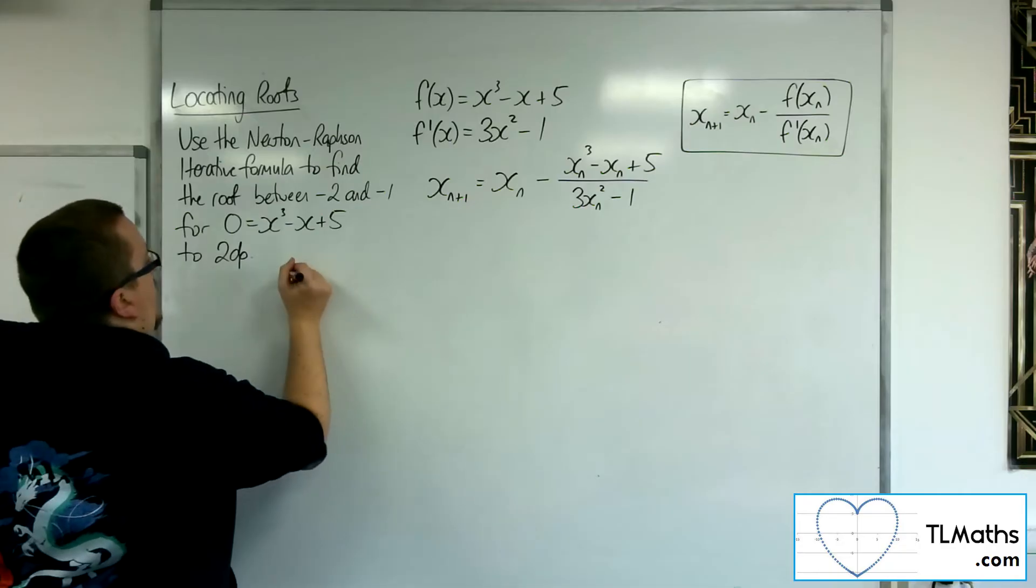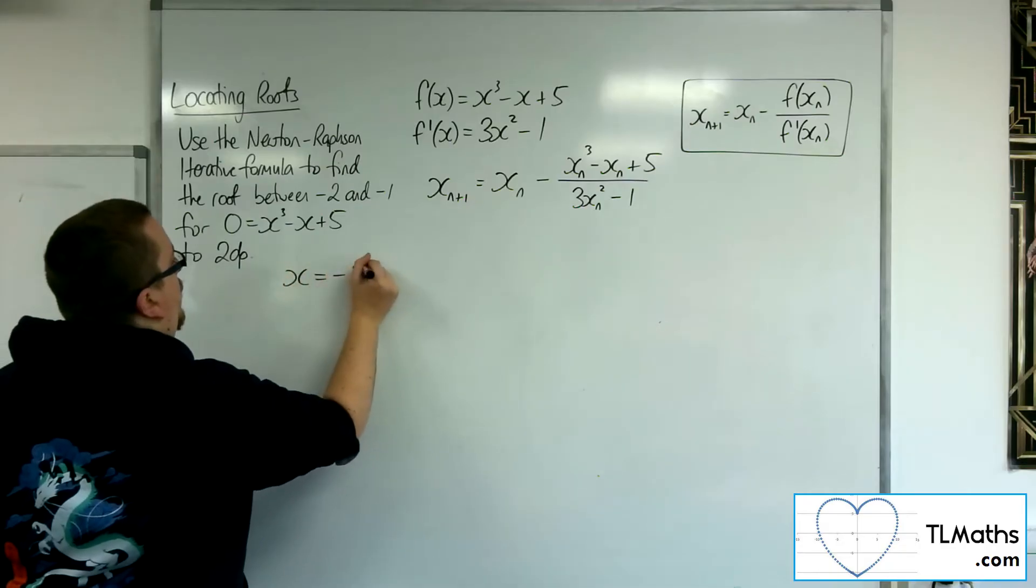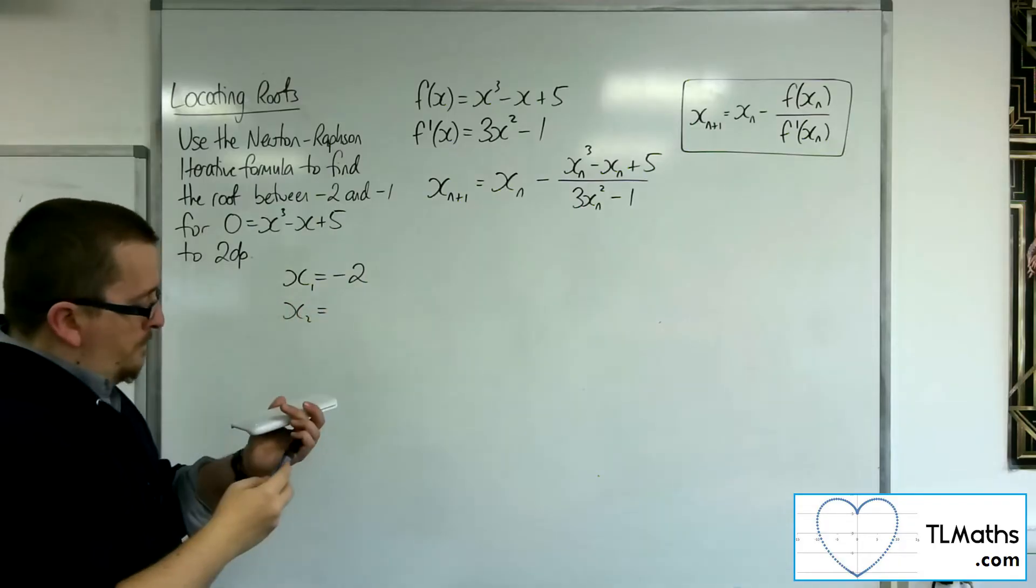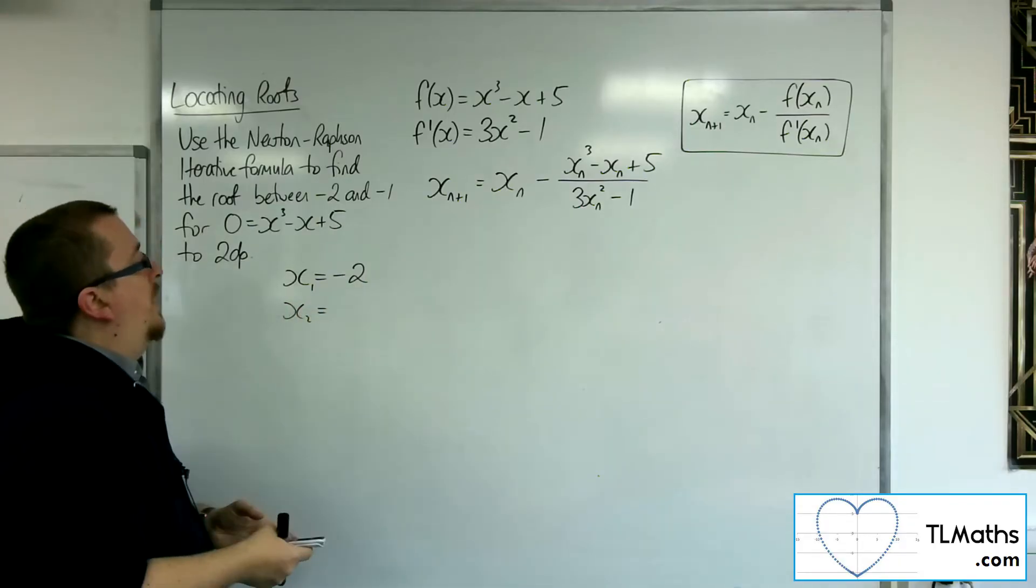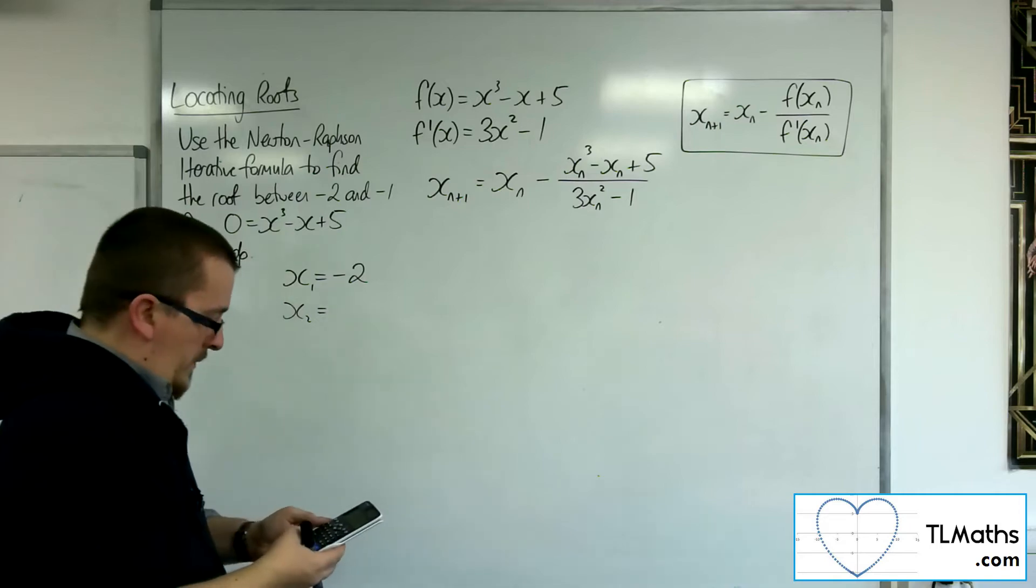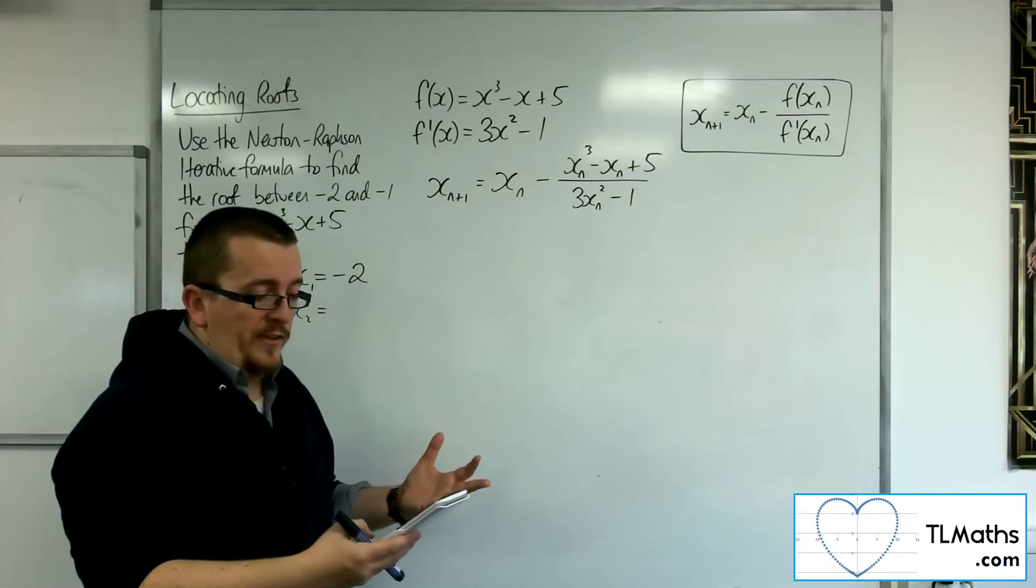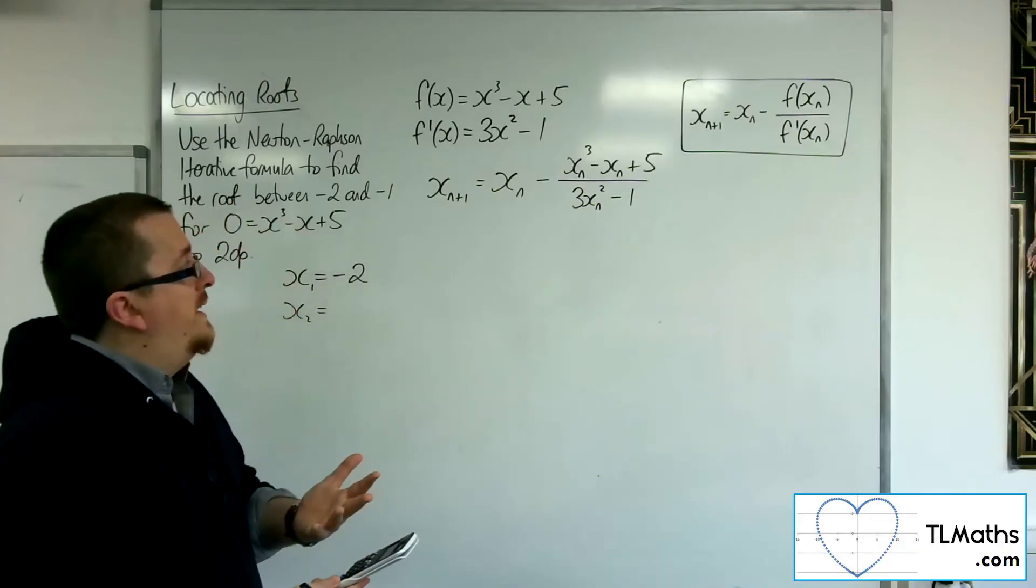Let's start off with -2, so that's going to be x₁. I want to find x₂. What I'm going to do is type in -2, press the equals button, puts that in the calculator's memory.